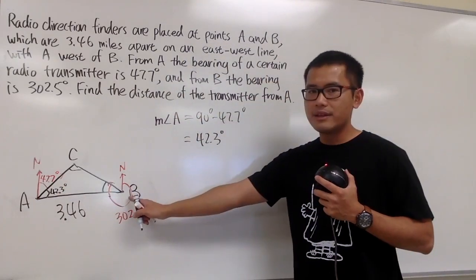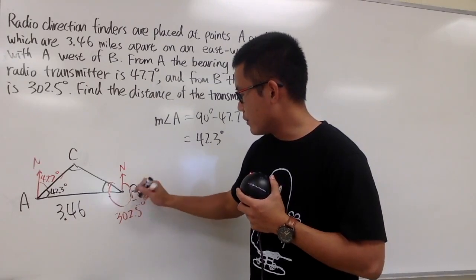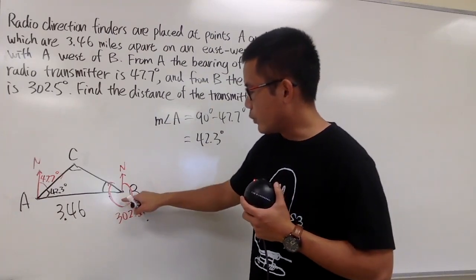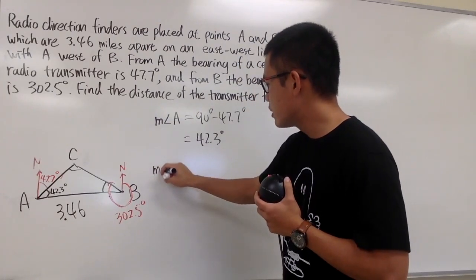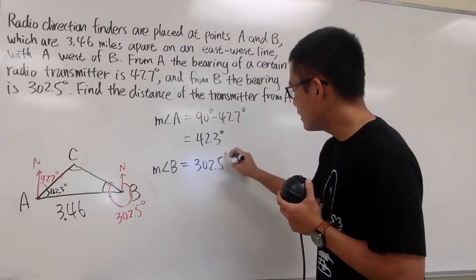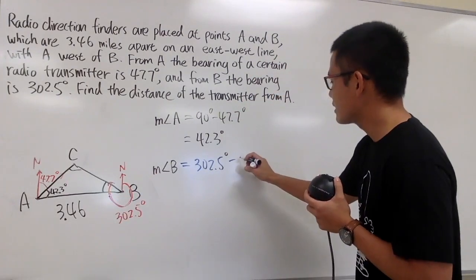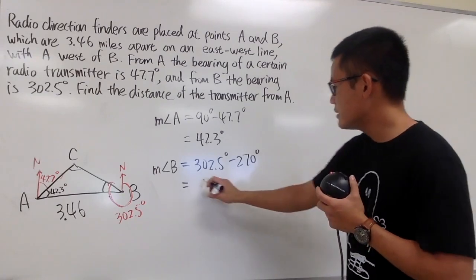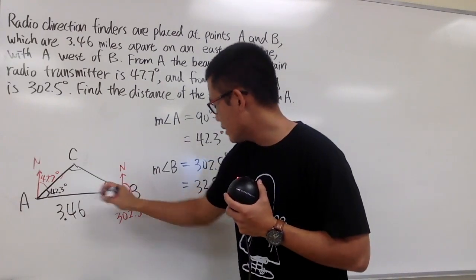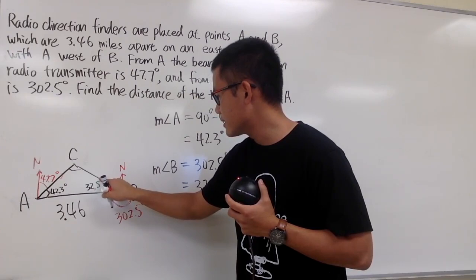Now let's find angle B. The whole bearing was 302.5 degrees, but from north going clockwise, we covered 270 degrees to reach the west direction. So we subtract: 302.5 minus 270 gives us 32.5 degrees. That's the angle inside the triangle at B — 32.5 degrees.